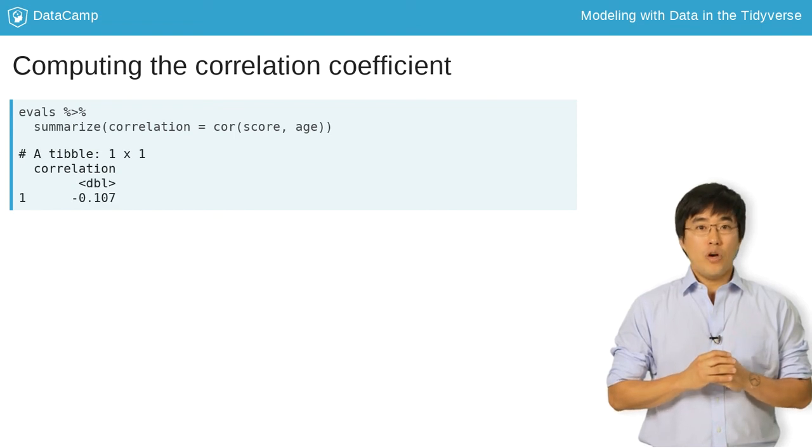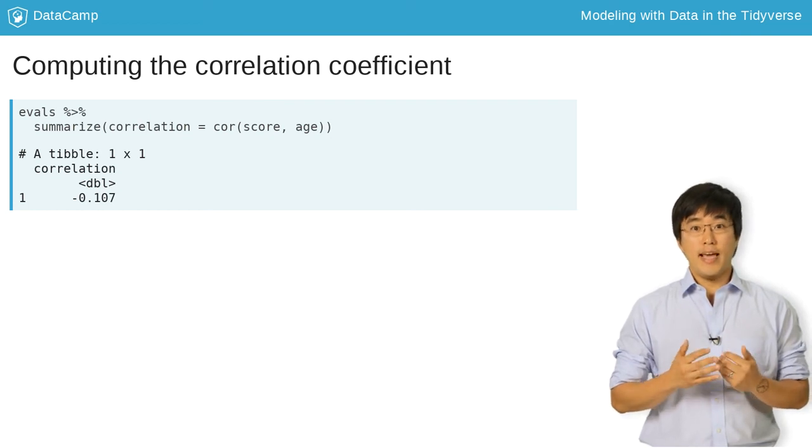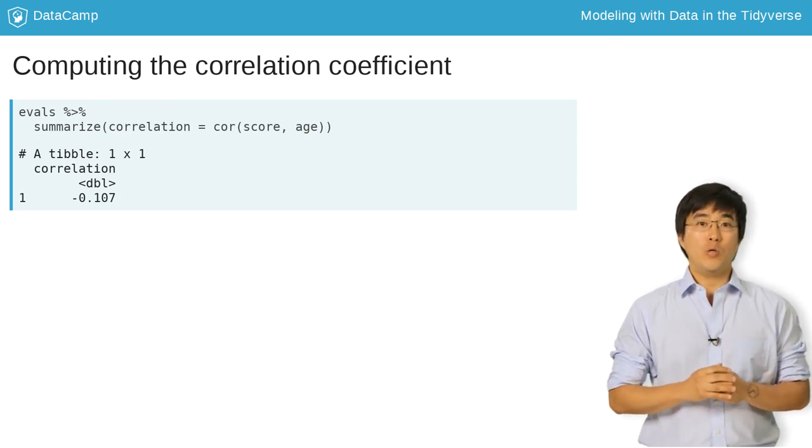Negative 0.107 indicates a negative relationship, meaning as professors age, they also tend to get lower scores. However, this relationship is only weakly negative.